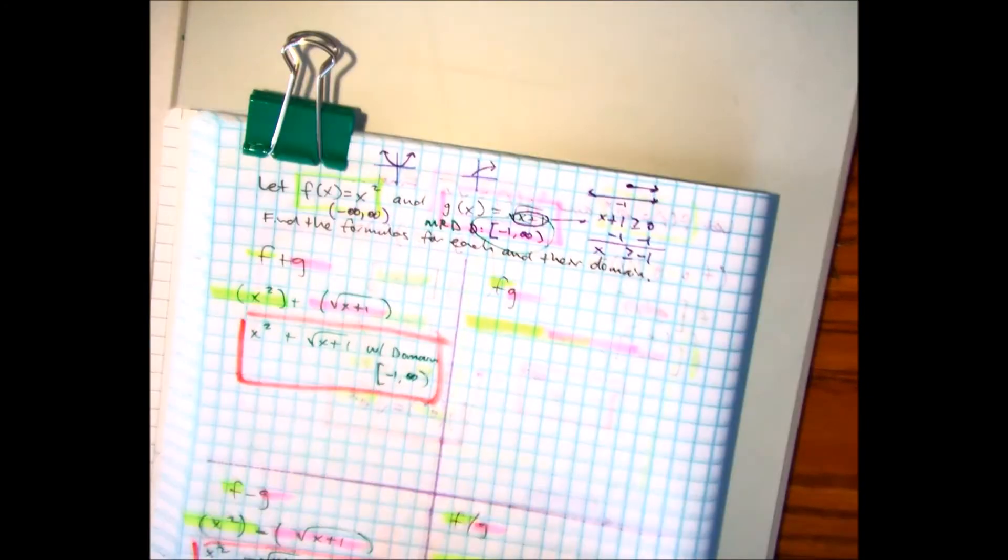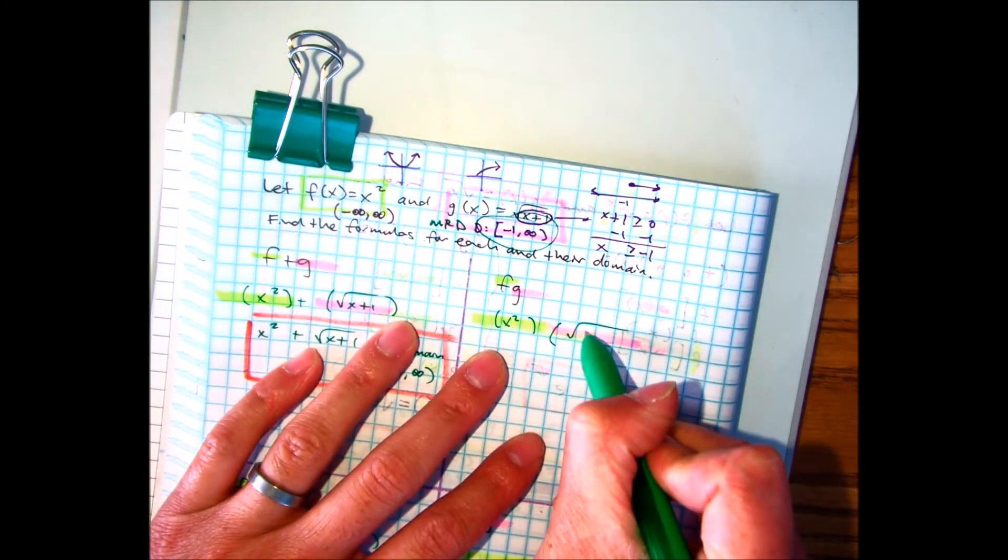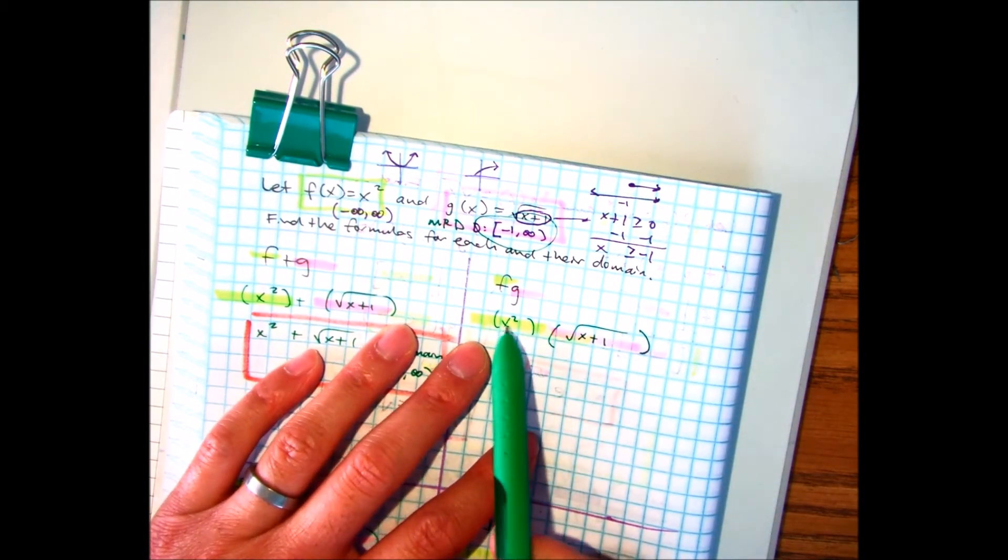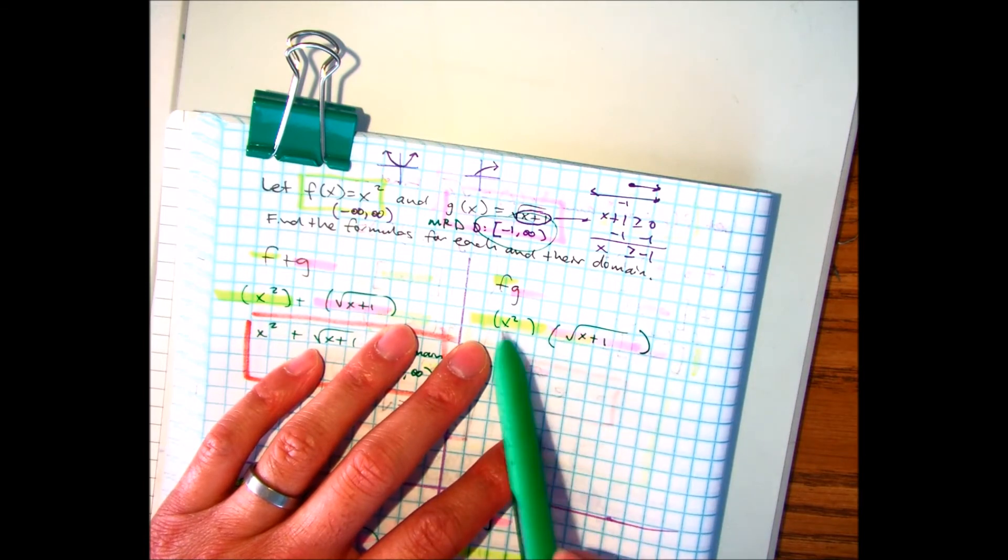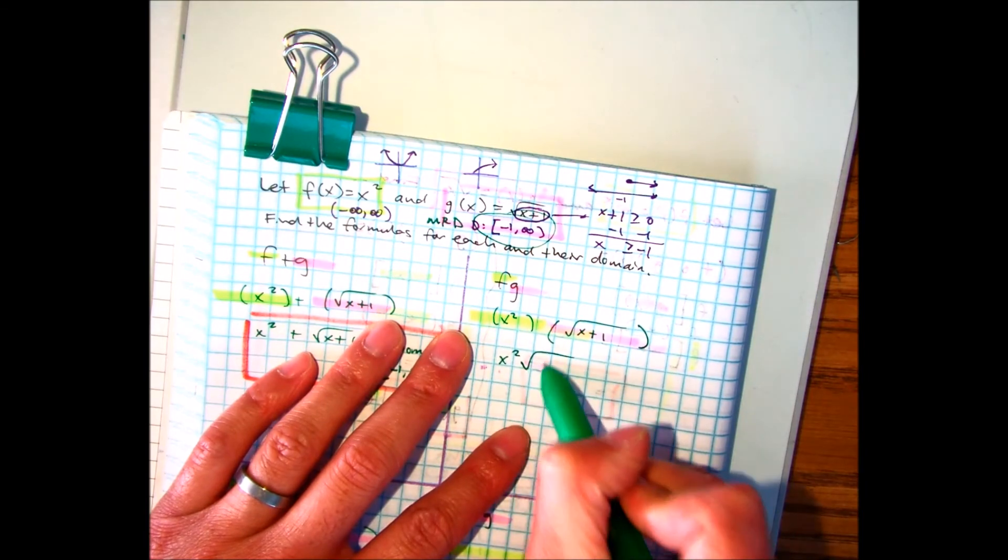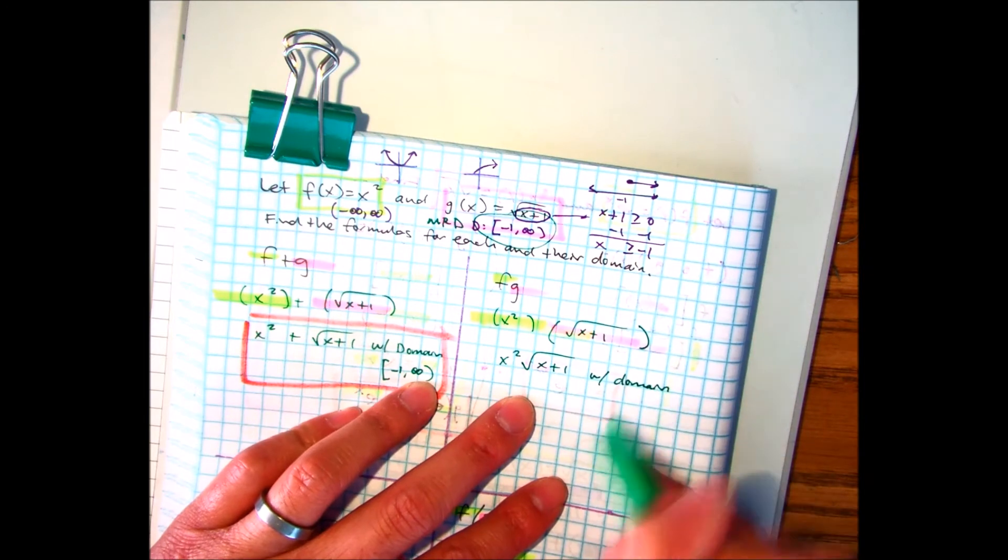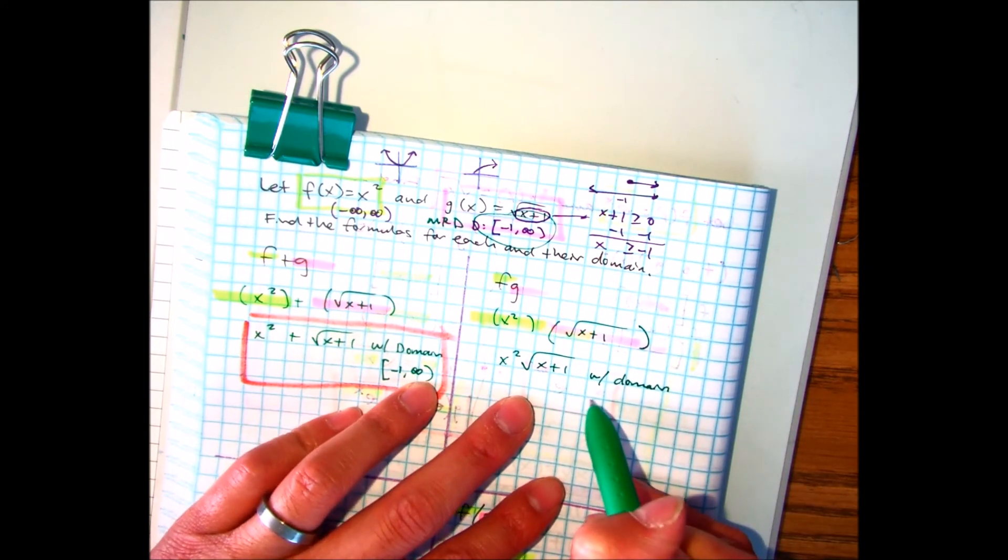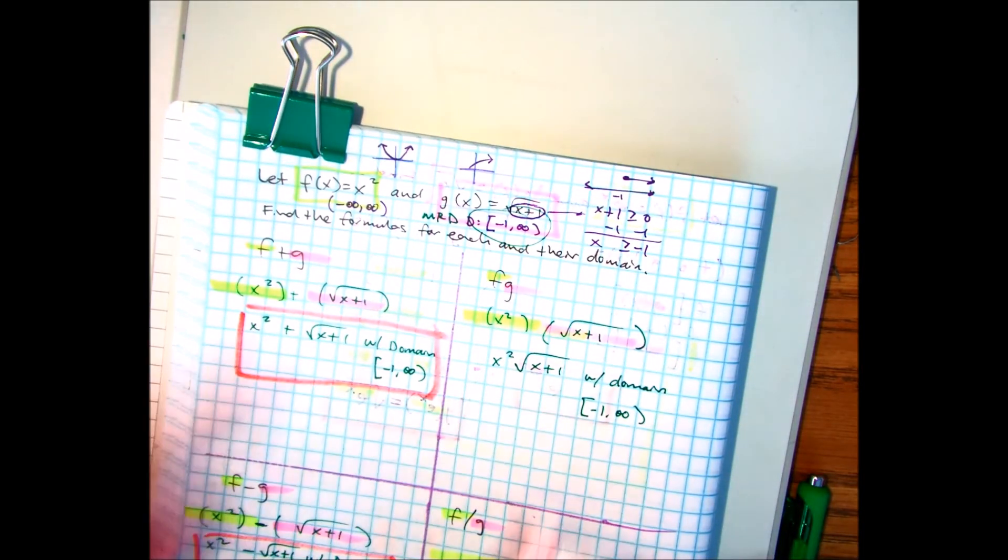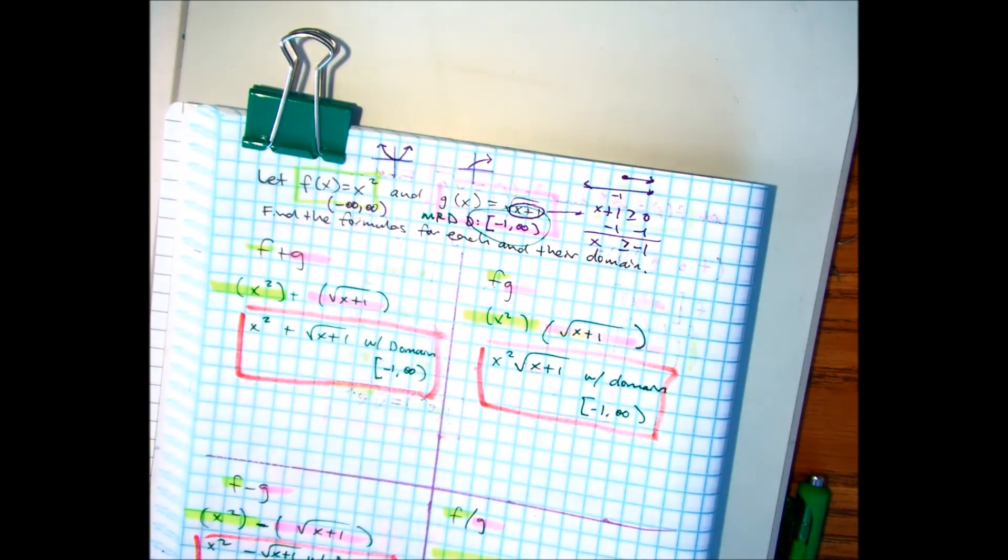So, f is just x squared times the square root of x plus 1. Don't think you could do something crazy like distribute inside the radical sign. It's not possible. So, this is actually just your answer. x squared, square root of x plus 1 with a domain of what? Raise your hand if you got that.